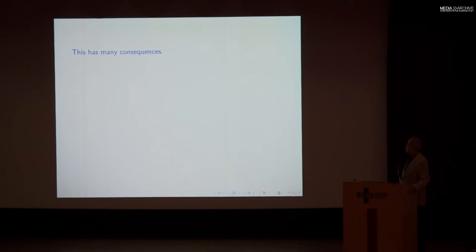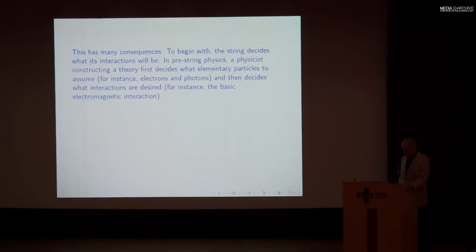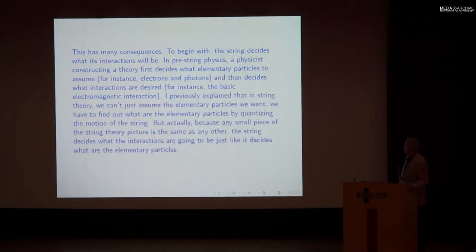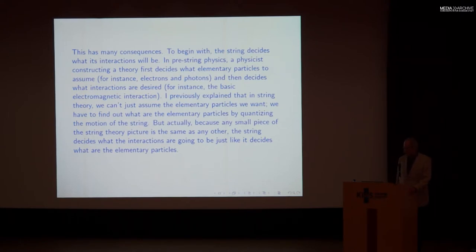This has many consequences. The string decides what its interactions will be. In pre-string physics, a physicist constructing a theory decides what elementary particles to assume — for instance electrons and photons — and then decides what interactions are desired, such as the basic electromagnetic interaction. In string theory we can't just assume the particles we want — we have to find out what they are by quantizing the motion of the string. And because any small piece of the string picture is the same as any other, the string decides what the interactions are going to be, just as it decides what are the elementary particles.